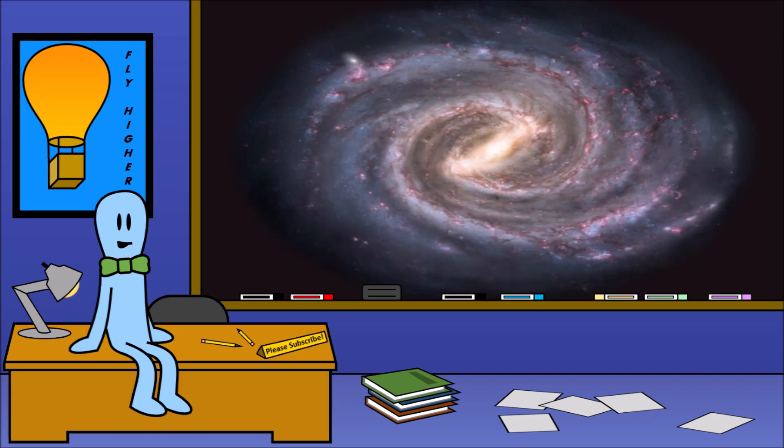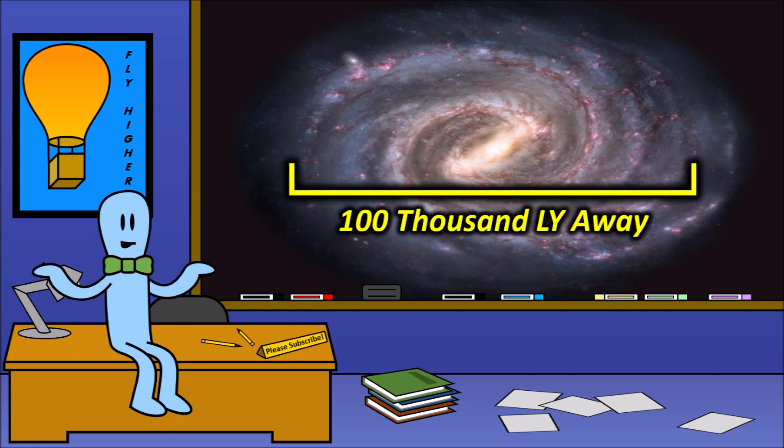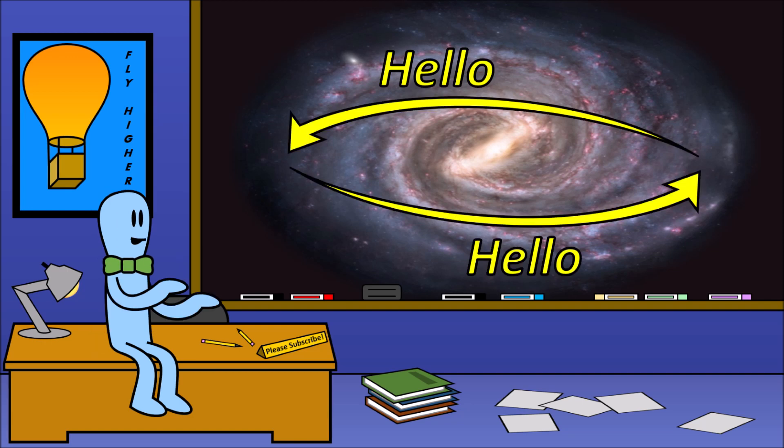If the closest intelligent life to us is in the Milky Way galaxy, then it could take up to 100,000 years for our radio signals to reach them. Meaning that if nothing goes wrong, it may take 200,000 years for just two intelligent species in the same galaxy to say hello to each other.